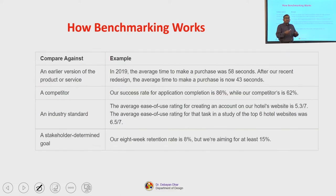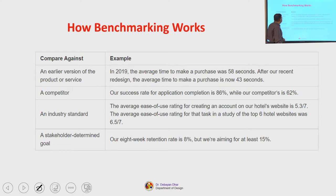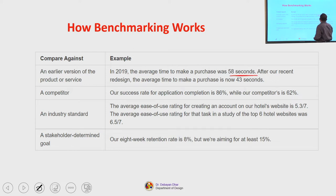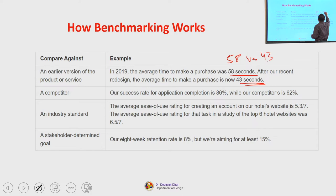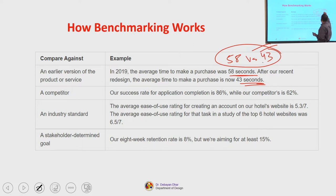Some examples you can consider: comparing against an earlier version of the product. For instance, in 2019 the average time to make a purchase was 58 seconds, while after a recent redesign the average time is now 43 seconds — so it is 58 versus 43. That is comparing between the old and new: you know your benchmark and where you currently are.